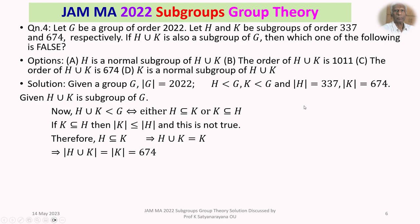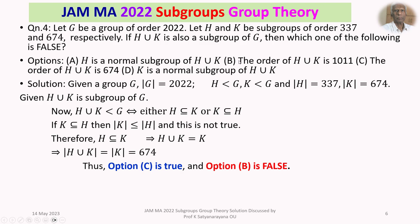Thus the order of the subgroup H union K is 674. Looking at our options: Option C says the order of H union K is 674, so Option C is true. Option B says the order of H union K is 1011, which is not true. So Option B is false.